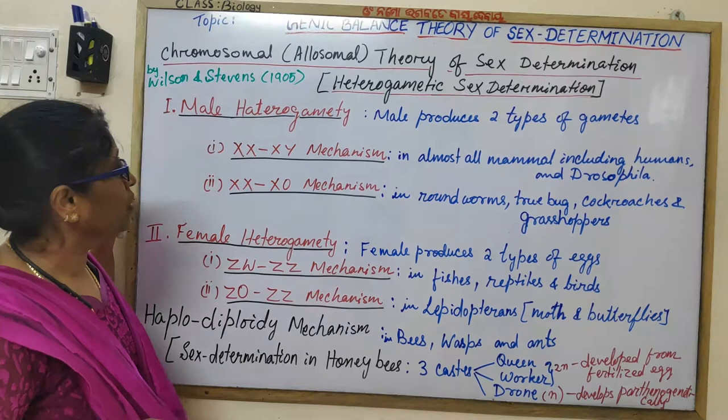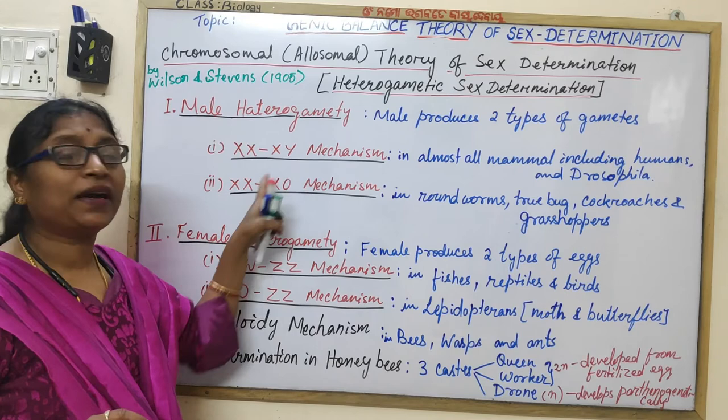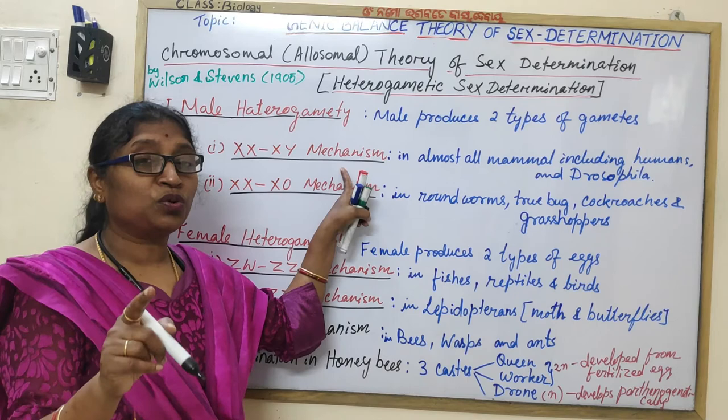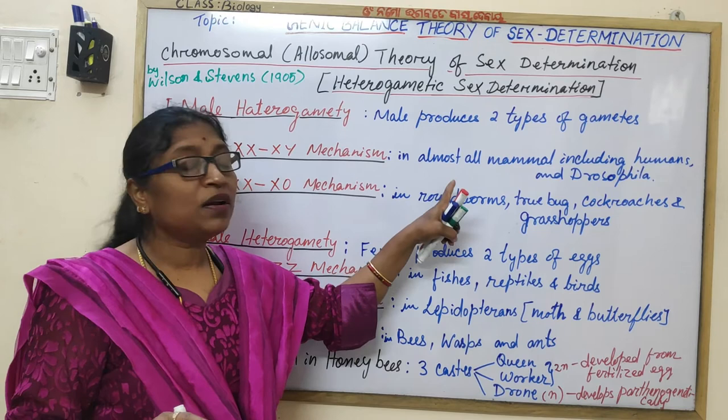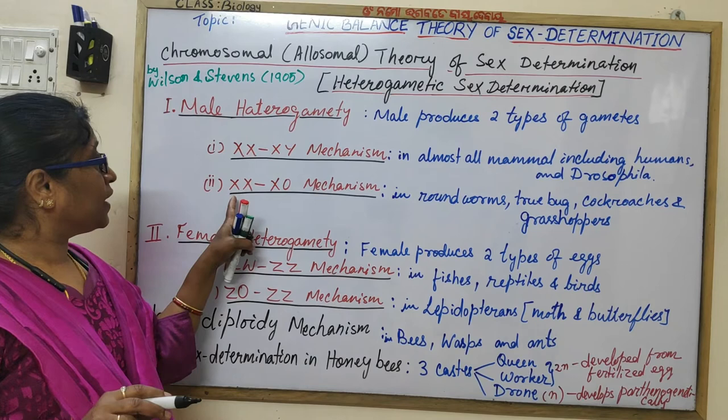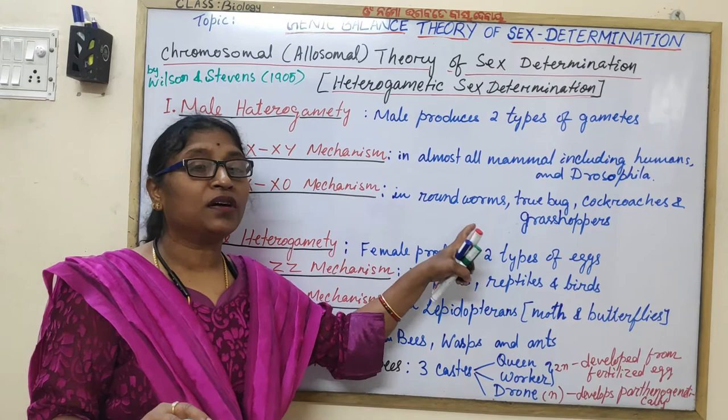Male heterogamity is of two types: the XY mechanism and the XO mechanism. The XY mechanism is also known as Lygaeus mechanism and is seen in almost all mammals including human beings and Drosophila. The XO mechanism is seen in roundworms, bugs, cockroaches, and grasshoppers.